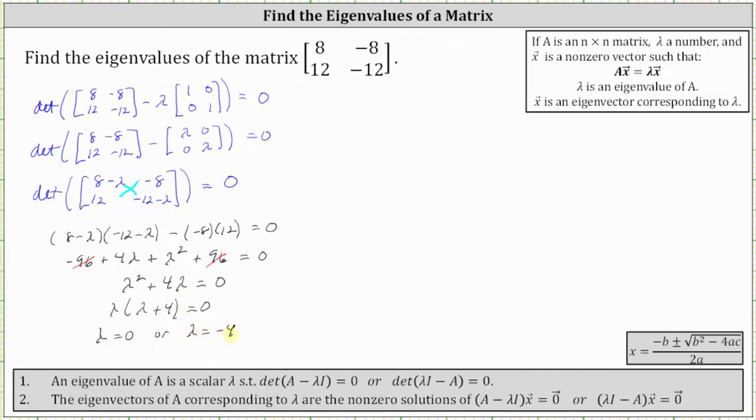So there are two eigenvalues for the given two by two matrix. Let λ₁ = 0 and λ₂ = -4. I hope you found this helpful.